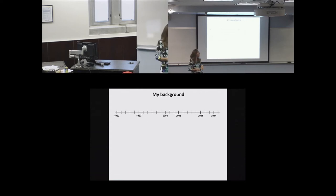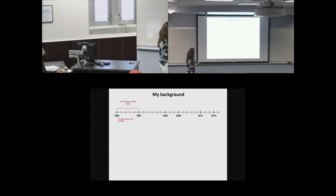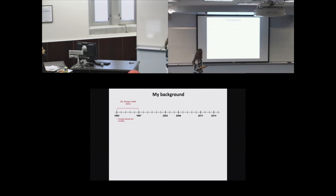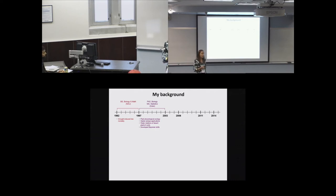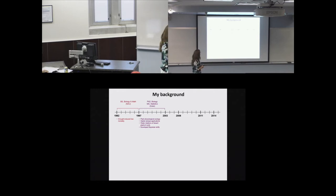A little bit about my background. I started out many years ago with a bachelor's in both math and biology, so that's where I began thinking about integrating ecology and math and statistics. I conducted an independent research project as an undergraduate focusing on understanding drought-induced tree mortality following a major drought event in the Southwest. From there I went on to do a PhD in biology, kept taking courses in math and statistics, and was introduced to Bayesian methods at Duke.